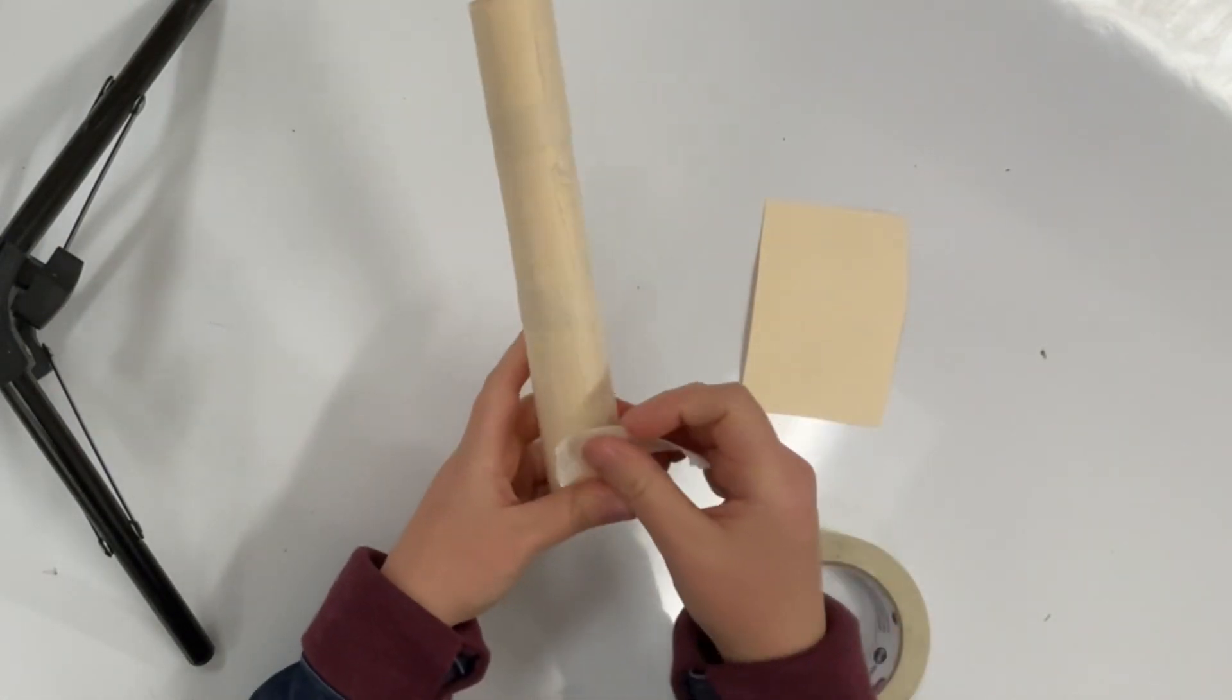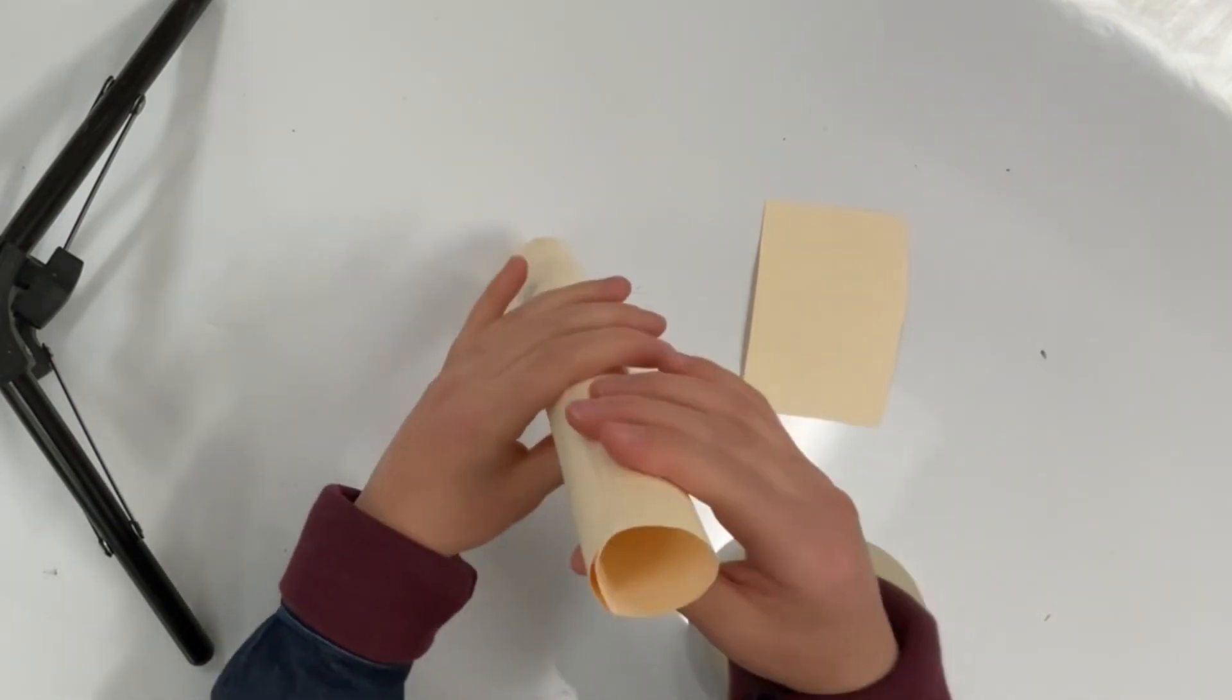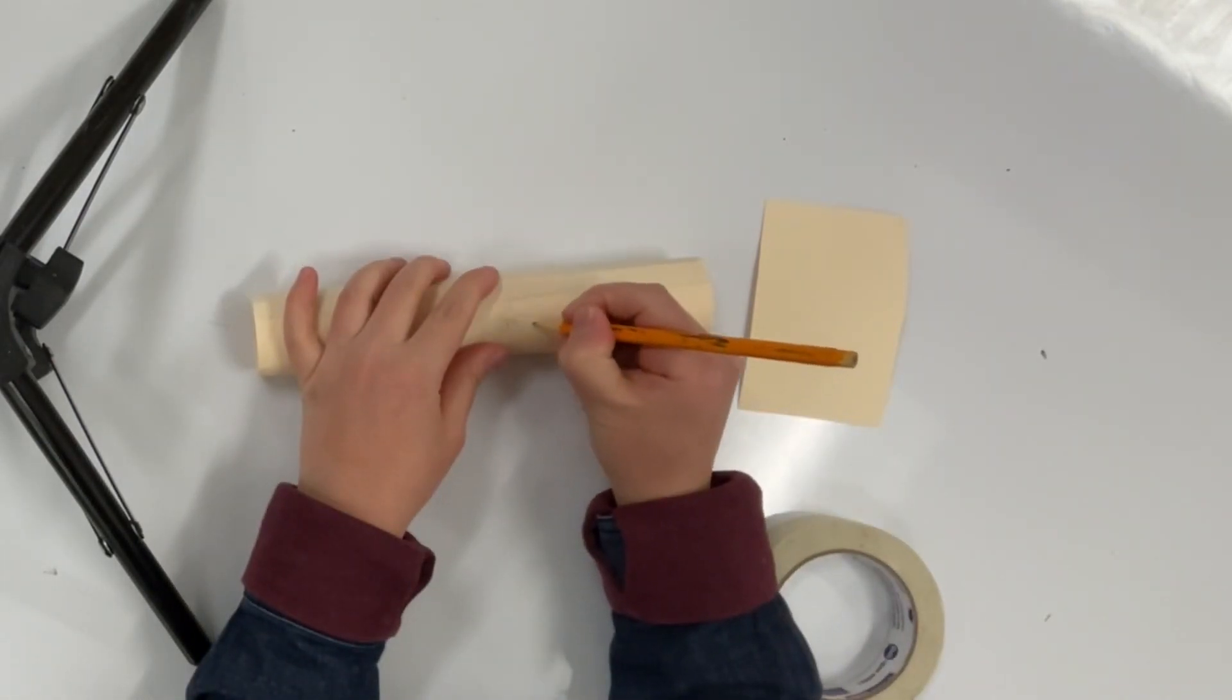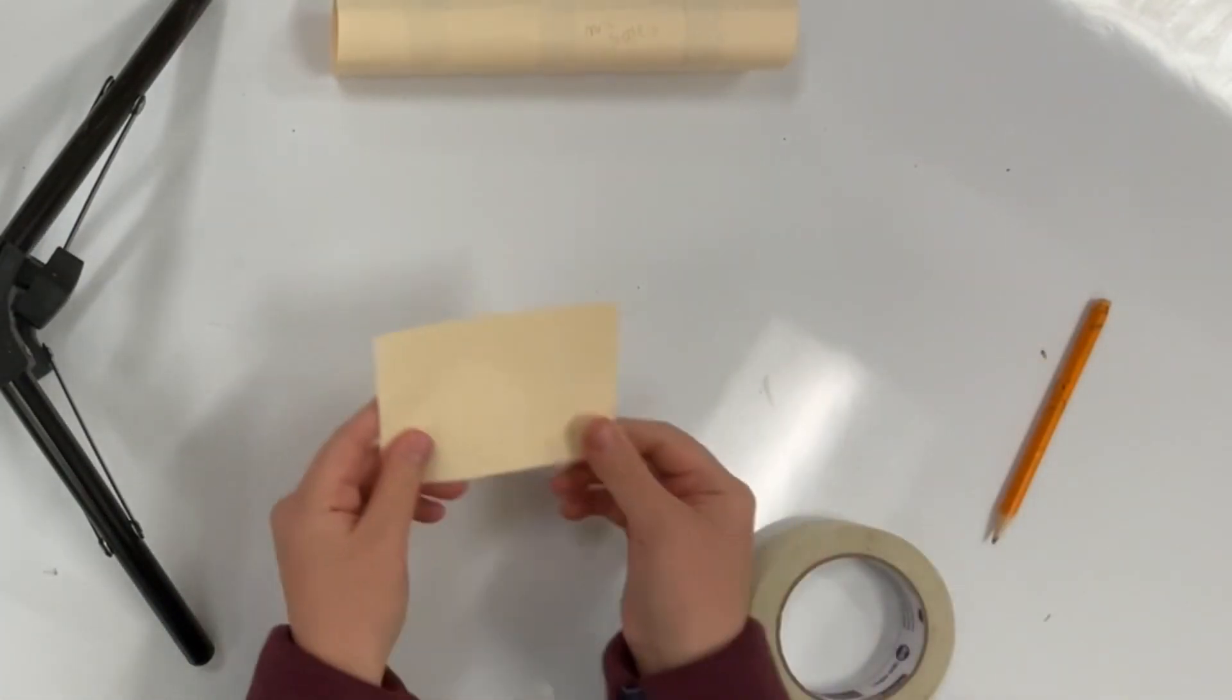So I've got my tube, making sure it's nice and round. I'm going to write my name on it—that's very important. Now I have this little piece of paper that's going to become my pencil tip.